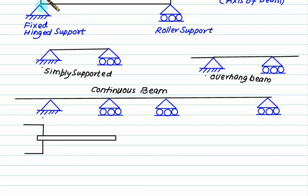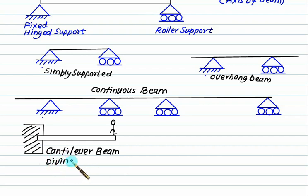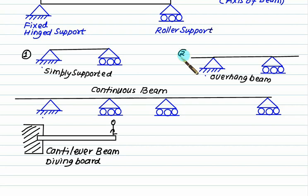In the case of a cantilever beam, one end is fixed in a rigid support and the other end is free, where a person can jump from that point. So these are the main types of beam: simply supported, overhang, continuous, and cantilever. For simply supported we also have overhang or double overhang.